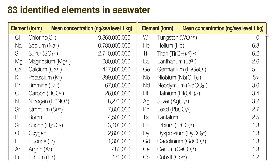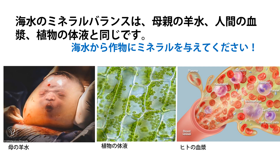As you can see, there are about 83 minerals in seawater. And if you look more closely, it is rich in sulfur, magnesium, calcium, potassium, phosphoric acid, iodine, and boron. What's even more amazing is that the nutritional balance of minerals in seawater is very similar to amniotic fluid in a mother's womb and the fluid of plants. Even blood plasma in humans is almost identical to this mineral composition. Many experts claim that plants and animals originally evolved from the sea.